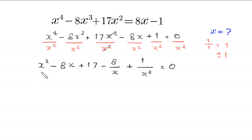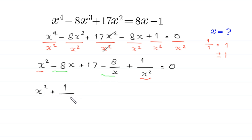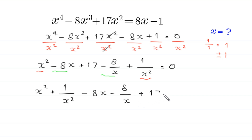Now we combine the two terms x squared and 1 over x squared, and we combine the two terms negative 8x and negative 8 over x. So this becomes x squared plus 1 over x squared, minus 8 times x plus 1 over x, plus 17, equal to 0.